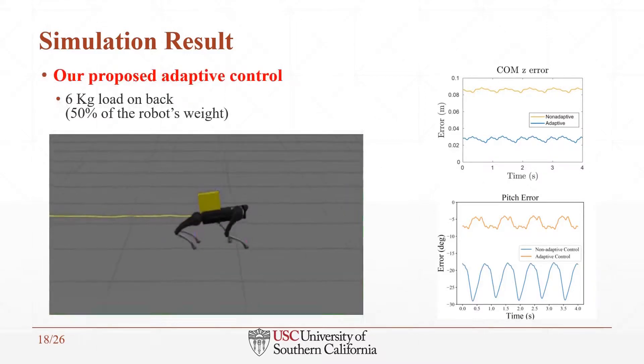However, the results from the adaptive controller indicate that our approach maintains the robot's error in a reasonably bounded range. And by utilizing the adaptive controller, the robot can carry an unknown 6 kg load, which is 50% of the robot's weight on its backside.